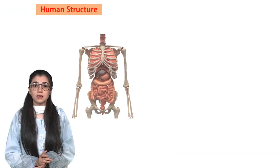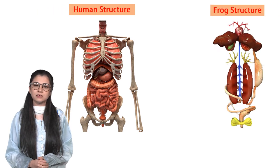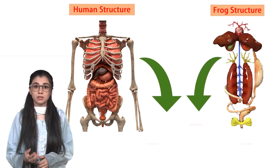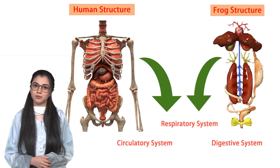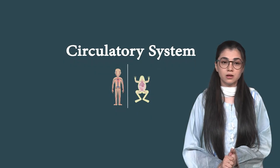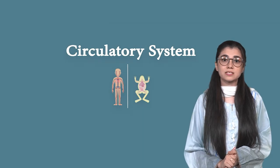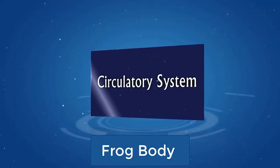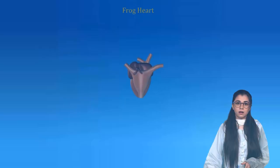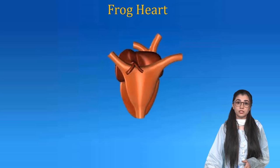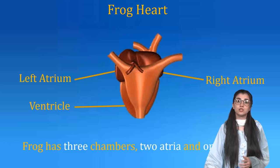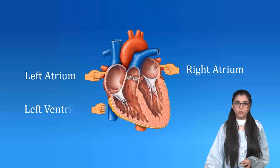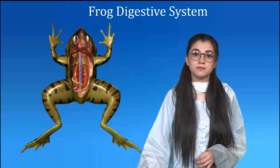These three systems have some similarities. Let's discuss them one by one: the circulatory system, digestive system, and respiratory system. Frogs have a three-chambered heart with two atria and one ventricle, compared to humans' two atria and two ventricles, which operate as the heart pumps blood throughout the body.